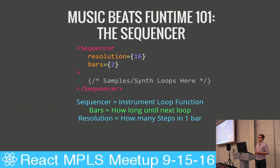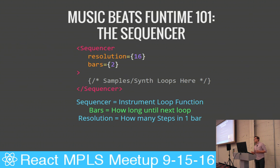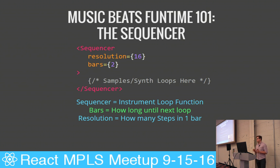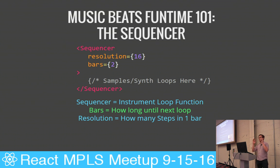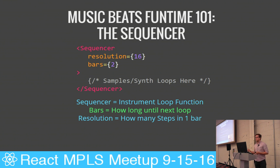Inside of the Song component, you have the Sequencer component, and this is where the magic starts to happen. The Sequencer is basically a loop machine. Any of the children within the Sequencer — your instruments, synthesizers, or samples — are going to loop and replay depending on what props you put into this component. The Sequencer has two required props: resolution and bars. The resolution is defining how many steps are in a bar. In this case we have 16 in the resolution — that's 16 steps.